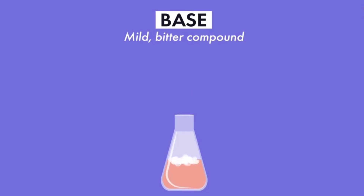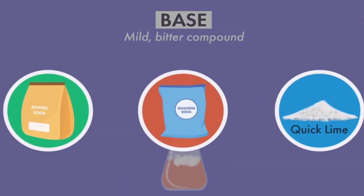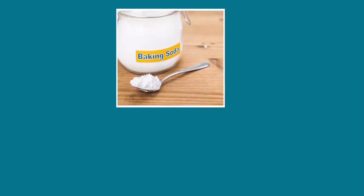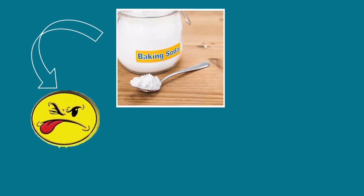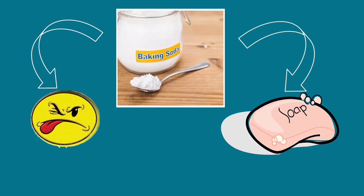Bases are exactly opposite to acids. The best examples of bases include baking soda, washing soda, quicklime, and many more. Baking soda does not have a sour taste — it has a bitter taste. It also feels slippery or soapy when touched. Substances such as baking soda that are bitter in taste and feel slippery when touched are called bases.